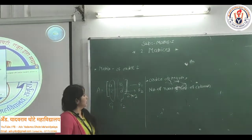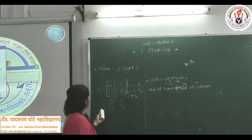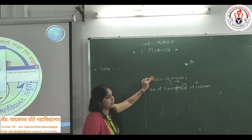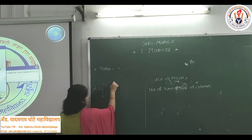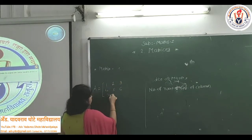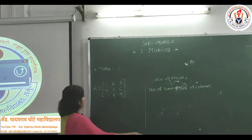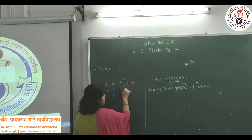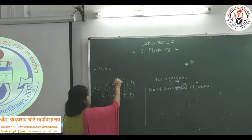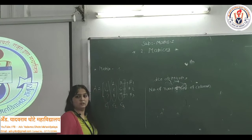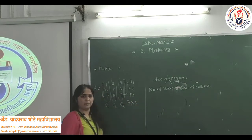Similarly, we can define the matrix of order 3 by 3. In this matrix of order 3 by 3, there are 9 elements enclosed between the square bracket. For example, matrix A equals 1, 2, 3, 4, 5, 6, 7, 8, 9. This is an example of a matrix of order 3 by 3, because there are 3 rows (R1, R2, R3) and 3 columns (C1, C2, C3).